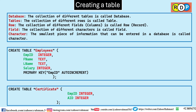What is a field? The collection of different characters is called a field. For example, employee ID is a field, which is also called a column. So 'e', 'm', 'p', 'i', 'd' — each is a character. The combination of different characters is called a field. A second field may be first name: 'f', 'n', 'a', 'm', 'e'. The smallest piece of information that can be entered in a database is called a character.